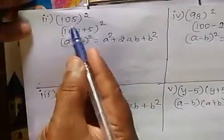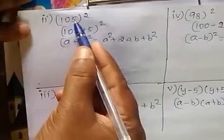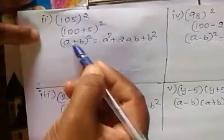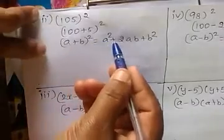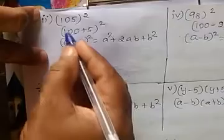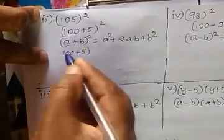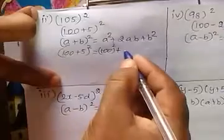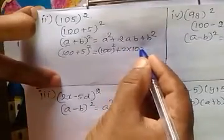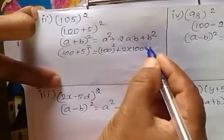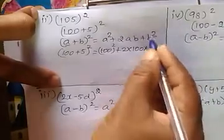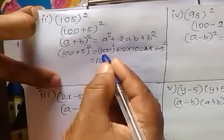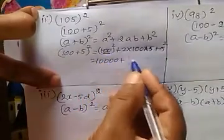Next, the second sum: 105 whole squared. We simplify by splitting: 105 = 100 + 5, so this is (100 + 5)². This is in the form of (a + b)² = a² + 2ab + b², where a is 100 and b is 5. So we get 100 squared plus 2 into 100 into 5 plus 5 squared.